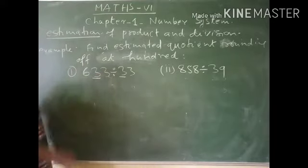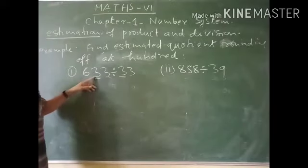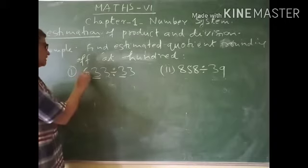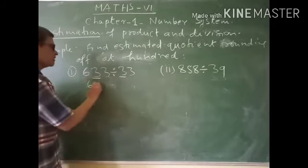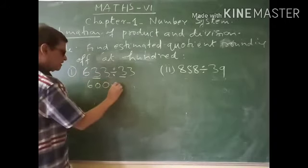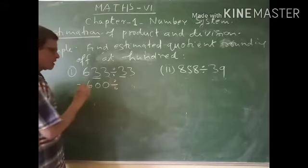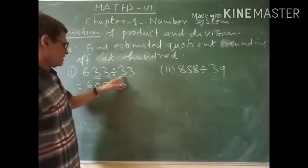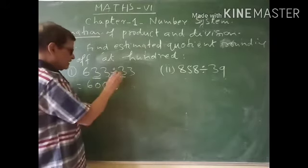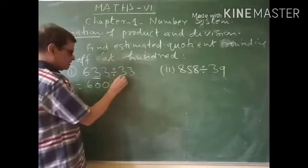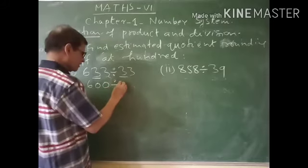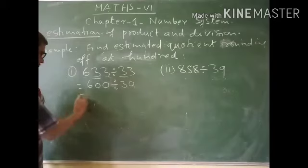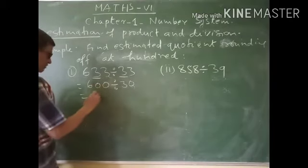At the tens place, this is 3 and it is less than 5, so there will be no change in 6. This will become 600. And at the tens place, 3 means there will be no change, so this will simply become 30 and the quotient will be 20.